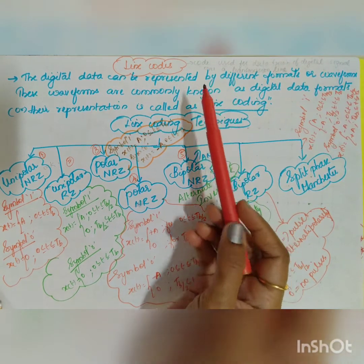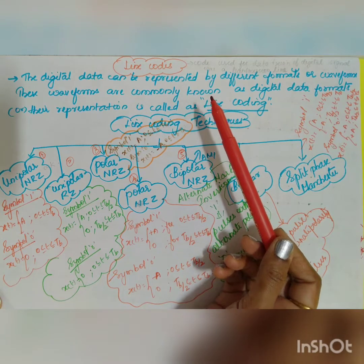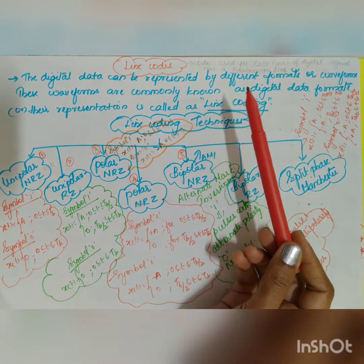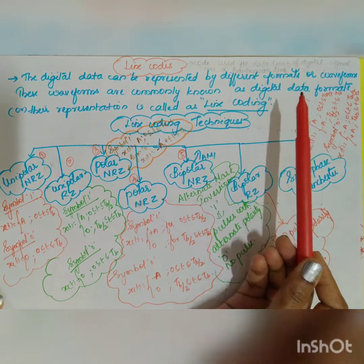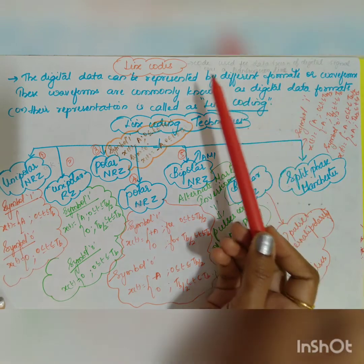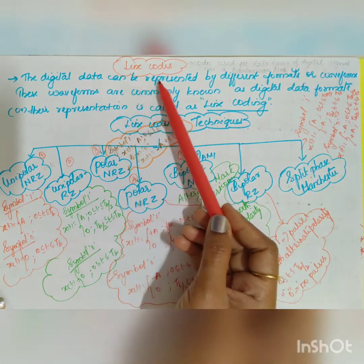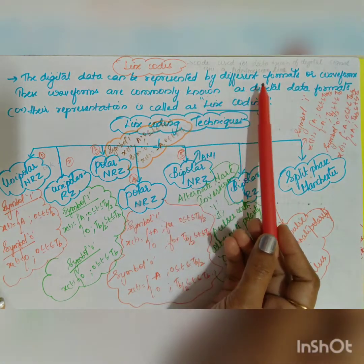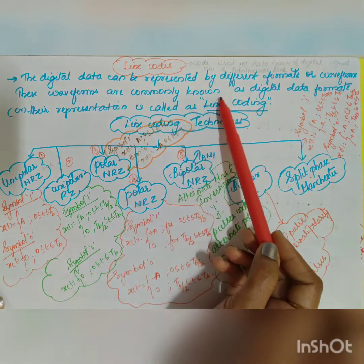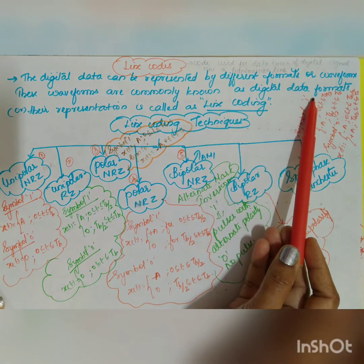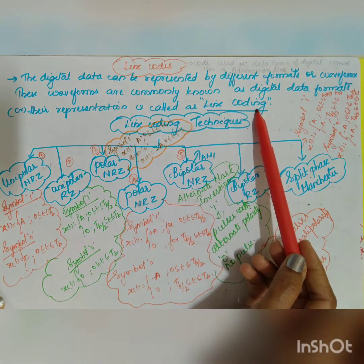The next topic in your first module is line codes. Basically, what is meant by line codes? Line codes are used for data transmission of digital signals over a transmission line. They can be defined as: digital data can be represented by different formats or waveforms. These waveforms are commonly known as digital data formats, and their representation is called line coding.